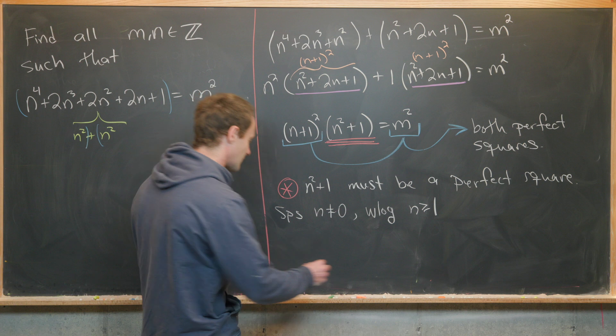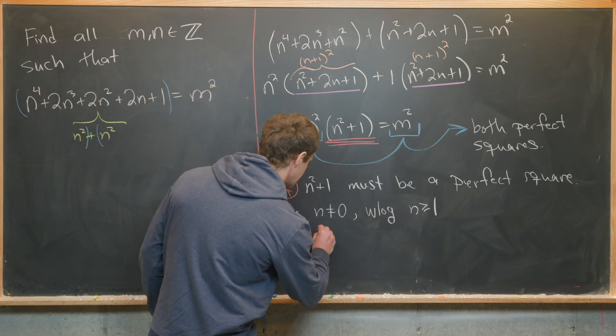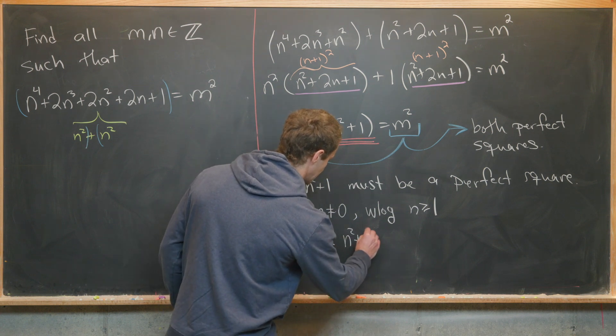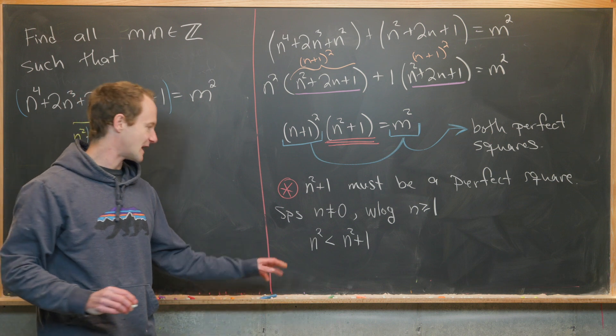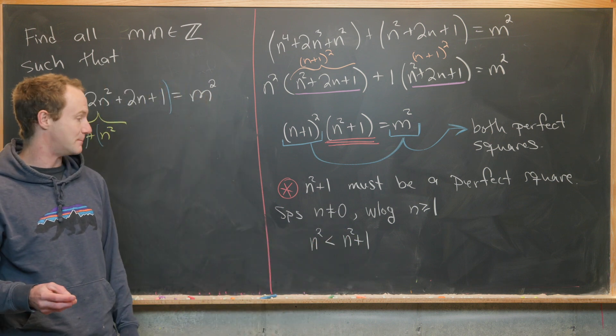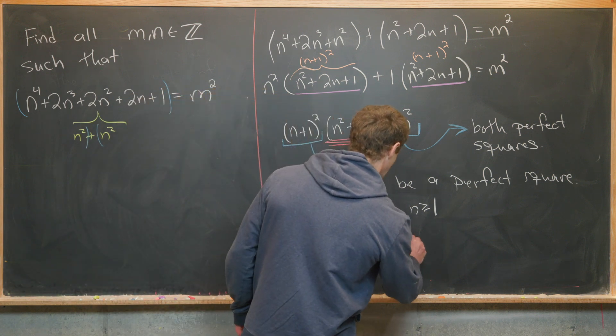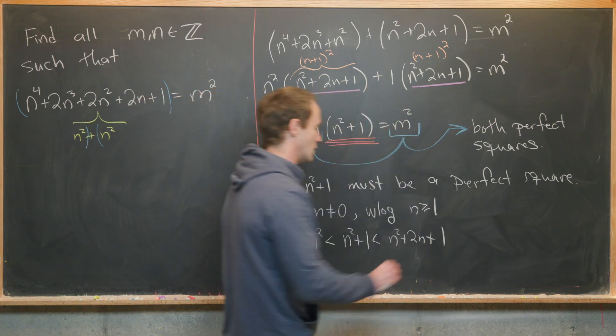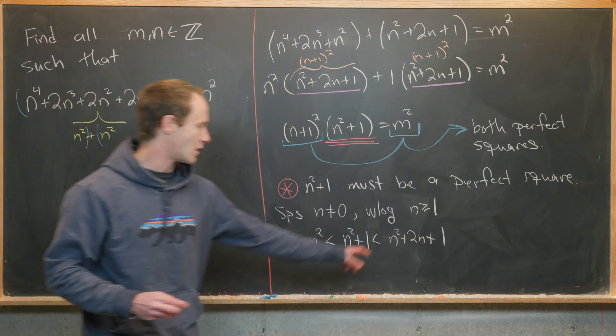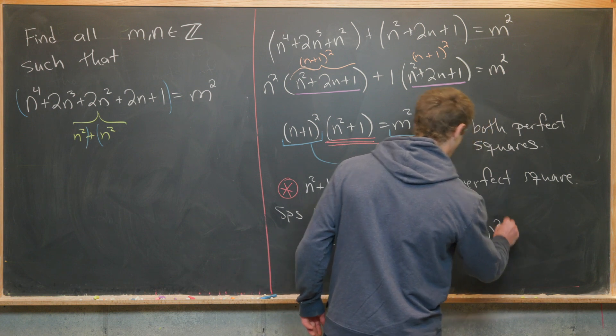Now let's notice that if n is bigger than or equal to 1, we have n squared is strictly less than n squared plus 1. Well, that's clear - we just added 1 to n squared. But this is strictly less than n squared plus 2n plus 1, because n is bigger than or equal to 1. And n squared plus 2n plus 1 is n plus 1 squared.